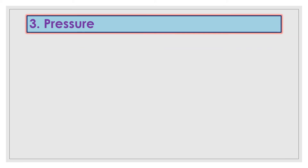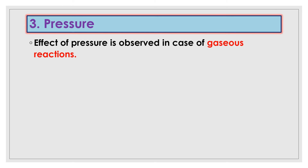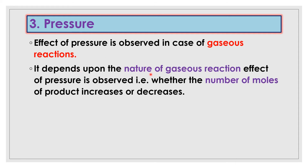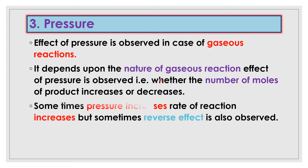The third factor is pressure. The effect of pressure is observed in the case of gaseous reactions. If the reaction involves gaseous species, the rate of reaction is affected by pressure. It depends upon whether the number of moles of product increases or decreases. Generally, gaseous reactions are affected by pressure, and the rate of reaction depends on this effect.